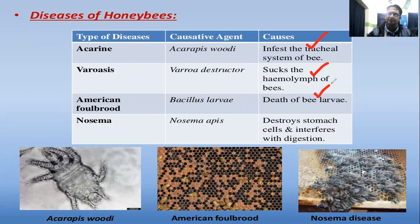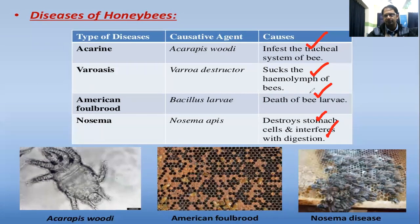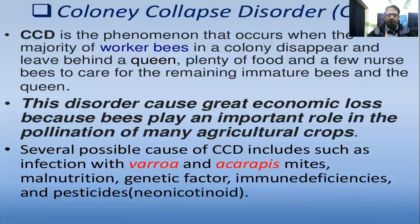Nosema, caused by Nosema bombycis and Nosema apis, destroys stomach cells and disrupts digestion. It is caused by a protozoan organism, which is why it is connected to protozoic disease mechanisms.